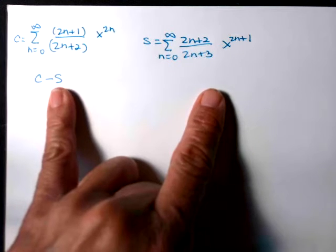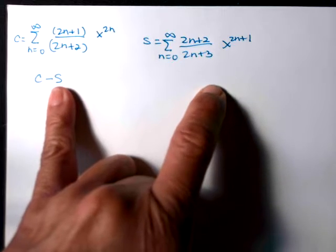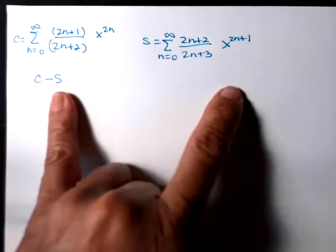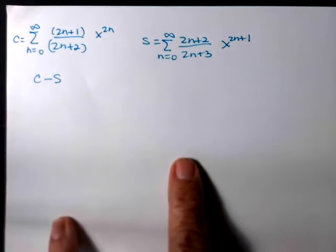So the way we're going to do this is we're going to just write out some terms for each of them and see if we can find that pattern. So I'll write out some terms for C, write out some terms for S, write the subtraction, and see if we see the pattern.